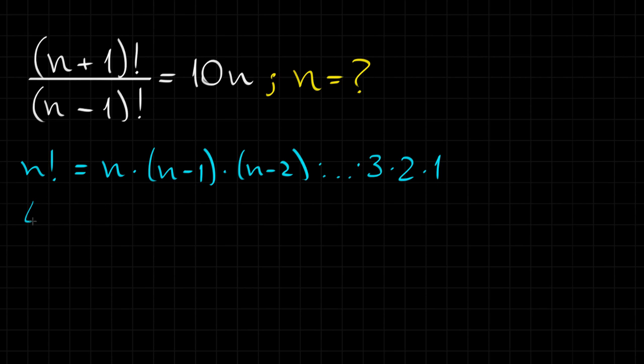For example, if we have 4 factorial, this is equal to 4 times 3 times 2 times 1. Is it okay?